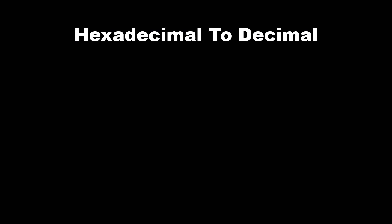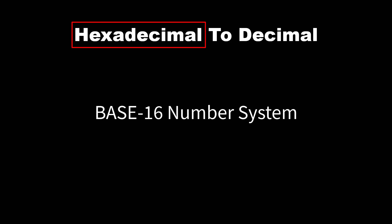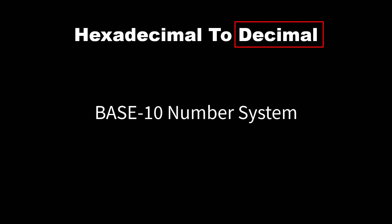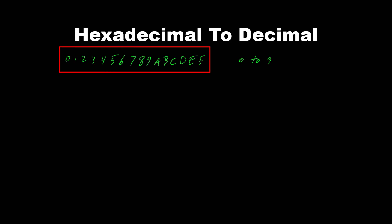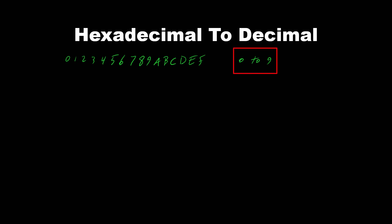As mentioned earlier, hexadecimal is a base 16 number system and decimal is base 10. In hexadecimal we have 0, 1, 2, 3, 4, 5, 6, 7, 8, 9, A, B, C, D, E, and F. In decimal we have 0 through 9. So in hexadecimal we have a total of 16 different numbers including 0, and in decimal we have a total of 10 different numbers including 0.